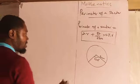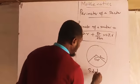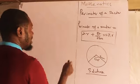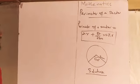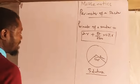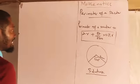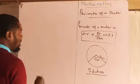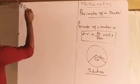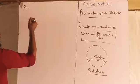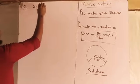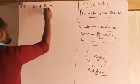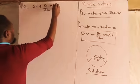Solution. Always state your formula before solving. We need to find the perimeter of that sector; the radius is seven and the angle at the center is 120 degrees. The perimeter of the sector is two r plus theta over 360 times two pi r.